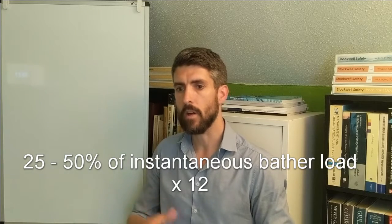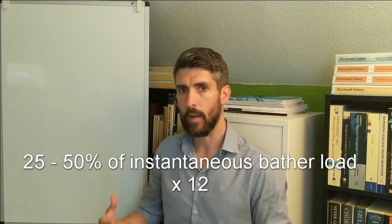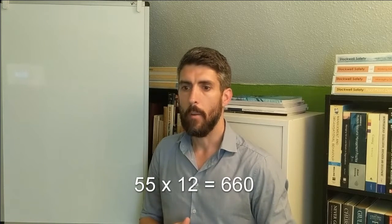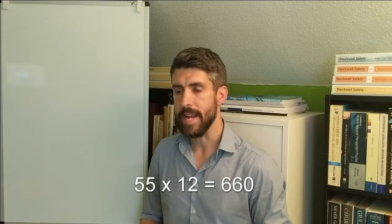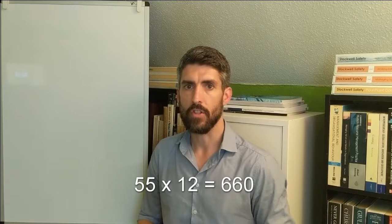So the way to work out the operational bathing load is to take the instantaneous bathing load that we worked out in another video. That's the starting point and you basically take, there's a formula that you can use to work out an appropriate daily bathing load. You take the instantaneous bathing load and you take 25 to 50 percent of that instantaneous bathing load and multiply by 12. So in the example I'll use the same figure that we got from the instantaneous bathing load in the other video. When we worked that out we got to an instantaneous bathing load of 110. So let's do 50 percent of 110 and then multiply that by 12. So we'd end up with a daily bathing load of 660. So that's 110 divided by 2, multiplied by 12, that would give 660 bathers per day.